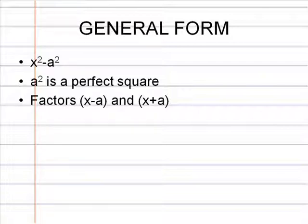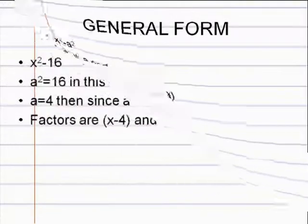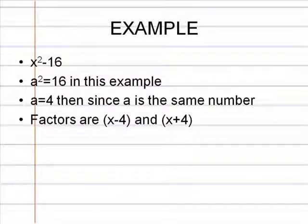As you can see, there is no middle term in this kind of polynomial because a is the same number in both factors. So when you expand it back out, the two x terms will cancel out. So for our example, we will factor x squared minus 16.